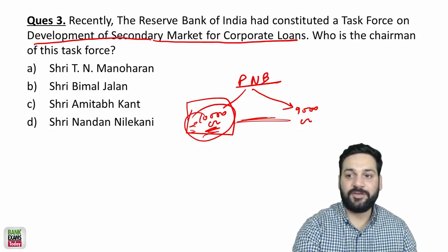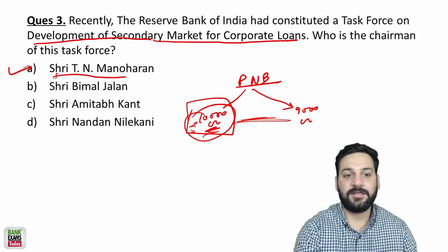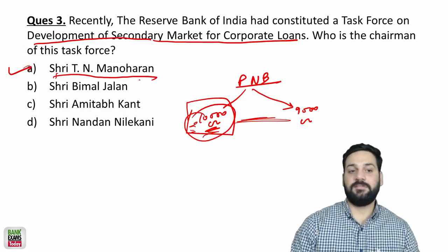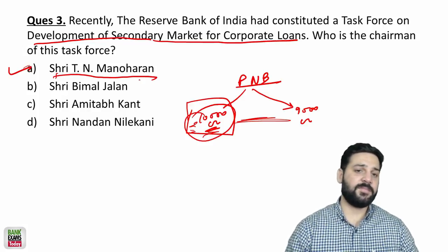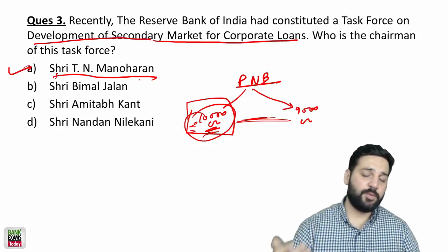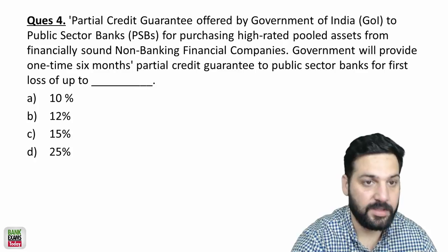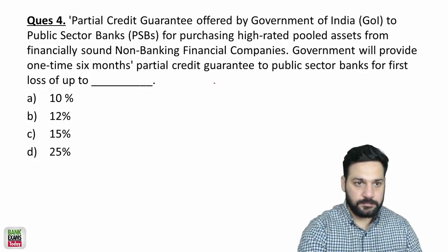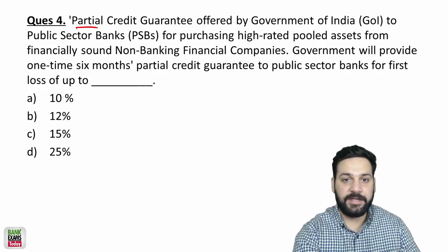The task force is headed by T.N. Manoharan, who is currently the Chairman of Canara Bank. He gave a lot of recommendations, and a proper video on this is available in the RBI Grade B 2020 course. The next topic is the partial credit guarantee offered by the Government of India to public sector banks.